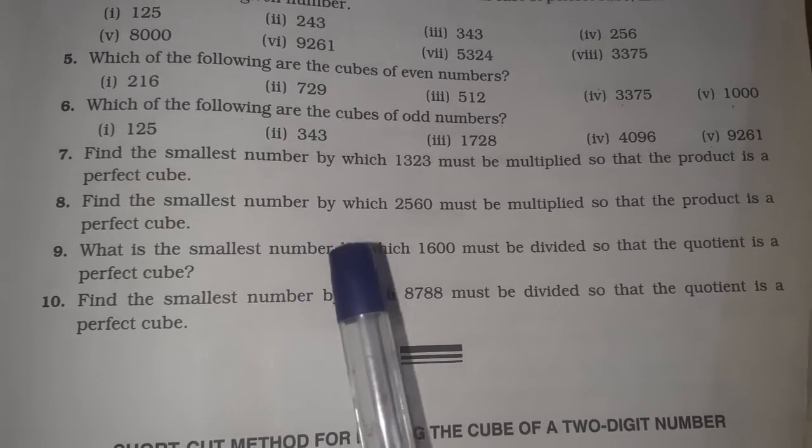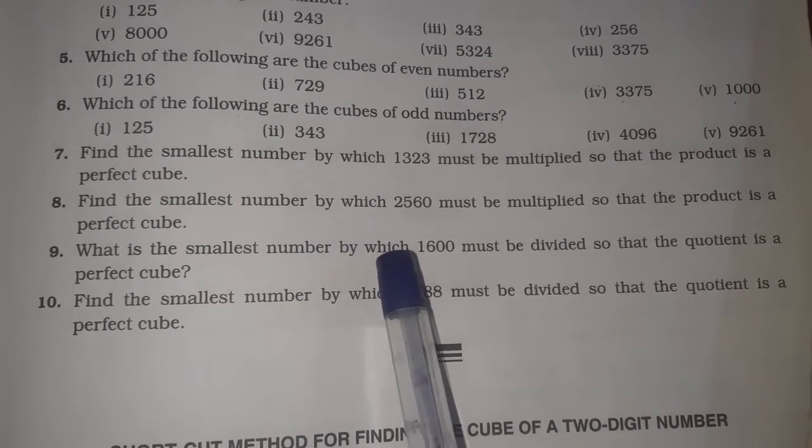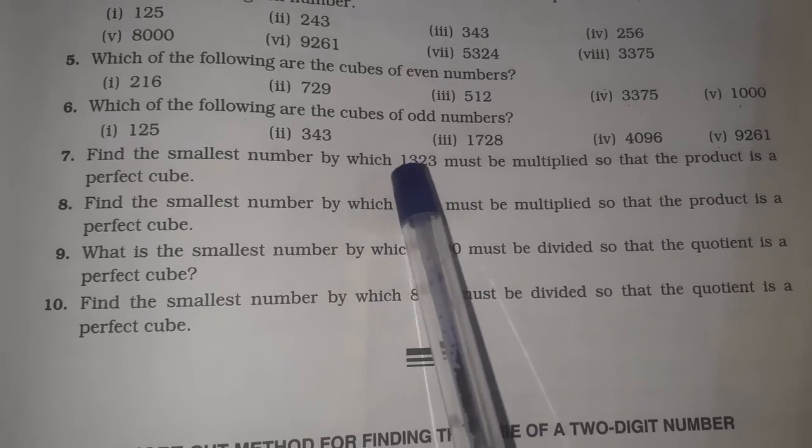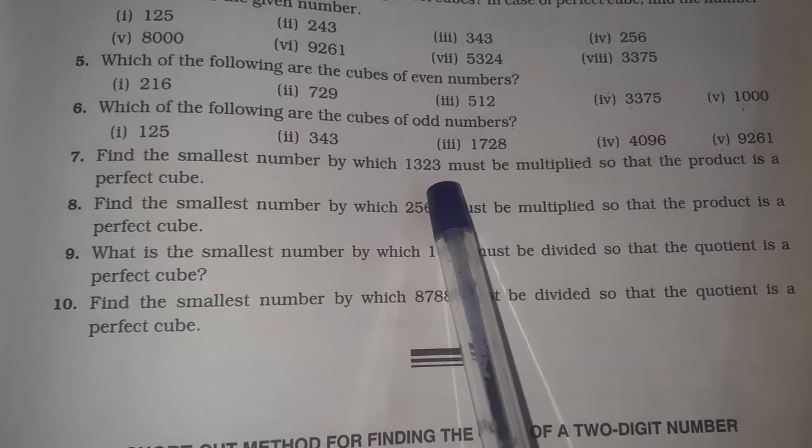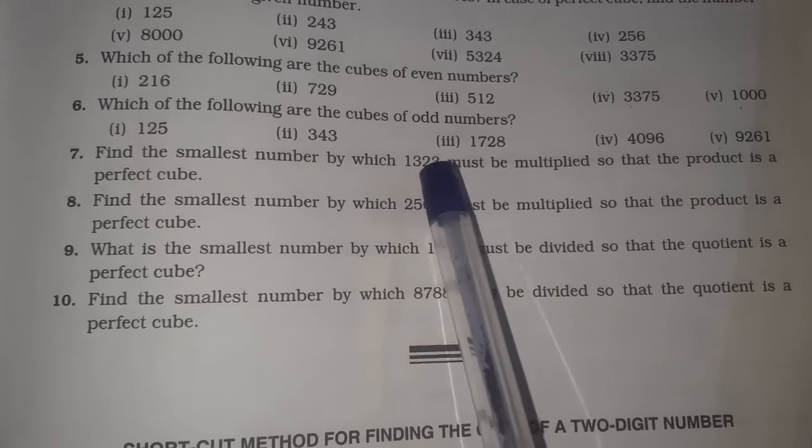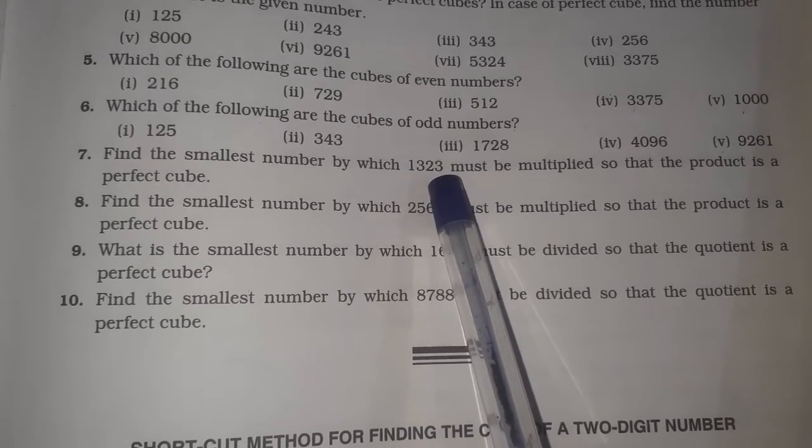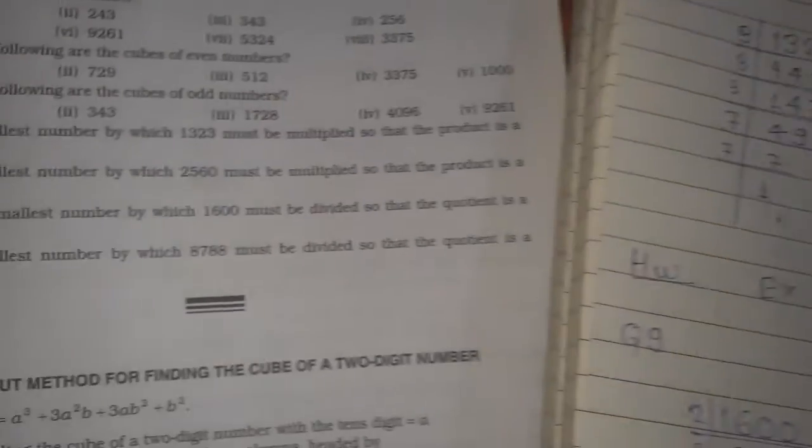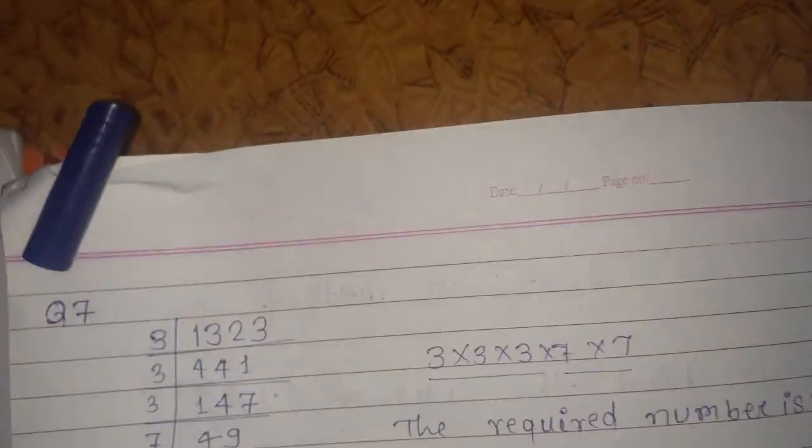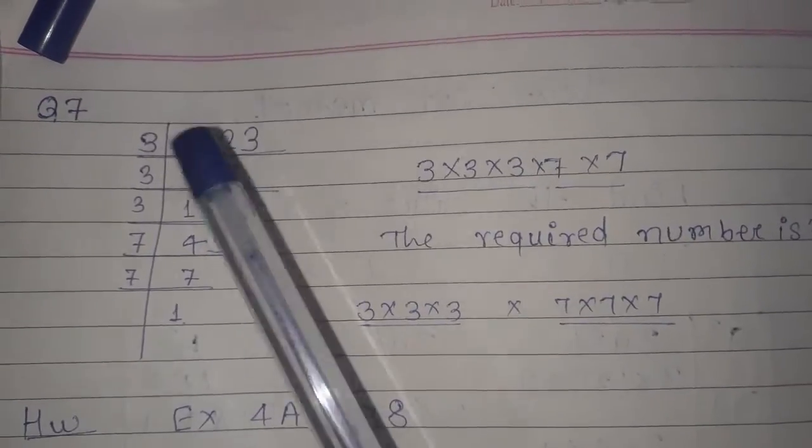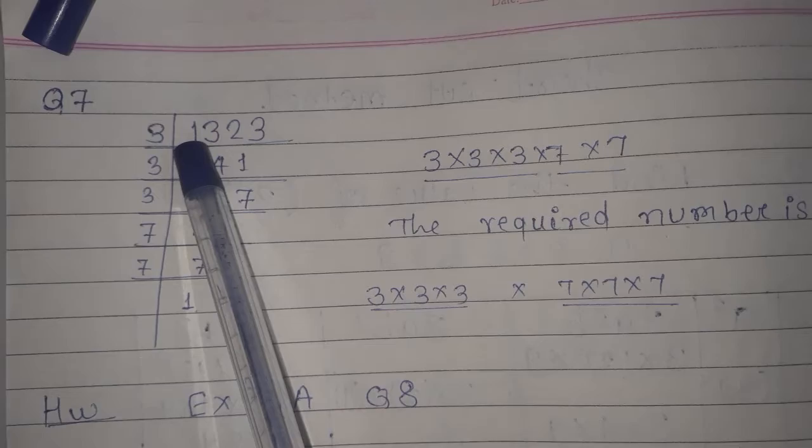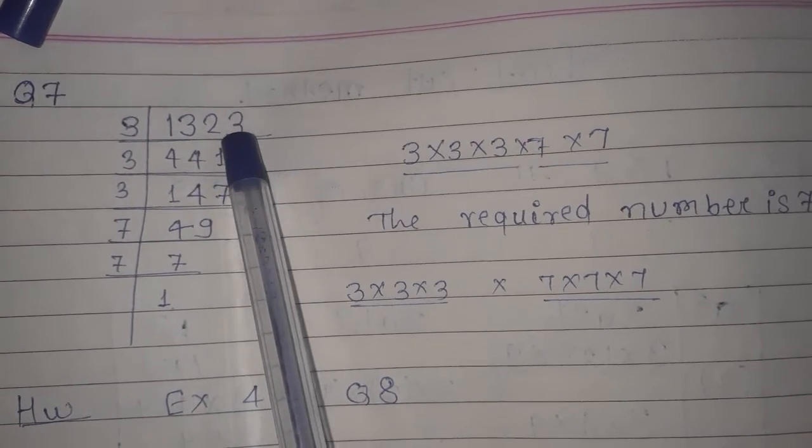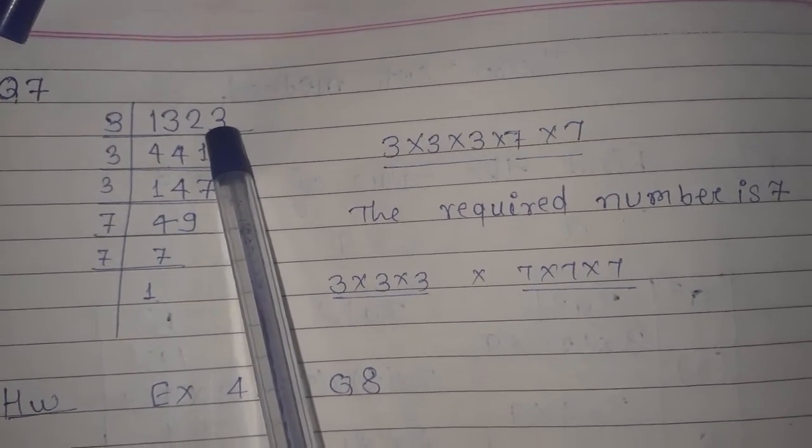Question number 7, now we are going to find the smallest number by which 1323 must be multiplied. This is not a perfect cube. The solution is prime factorization. Prime factorization for this odd number, so divide by 3.